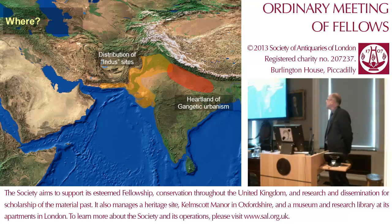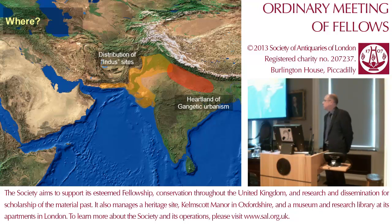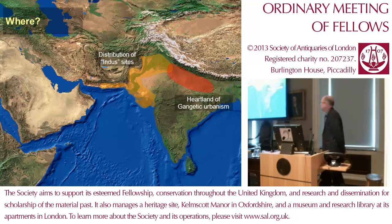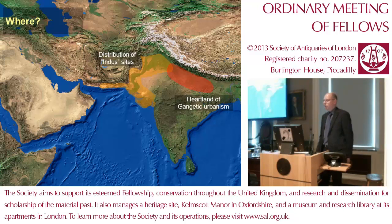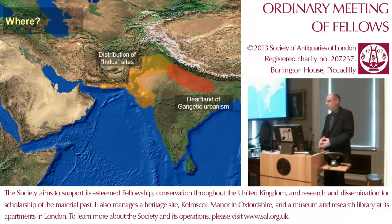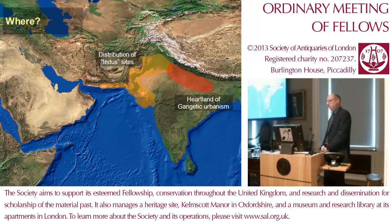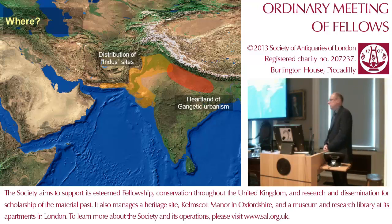I always find it's easiest to orient everyone by showing a map as soon as possible. When speaking about the Indus Civilisation, I'm speaking about quite a specific geographical region — the northwest of the South Asian subcontinent. I'll explain in a moment roughly where we're speaking in terms of chronological range. We're talking about one of these early Old World civilisations that develops more or less in the Bronze Age, and I'm also going to touch a little bit on what happened subsequently, because in South Asia there are two early phases of urbanism.